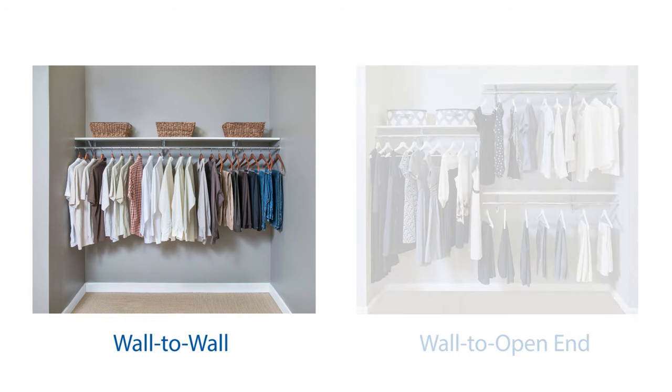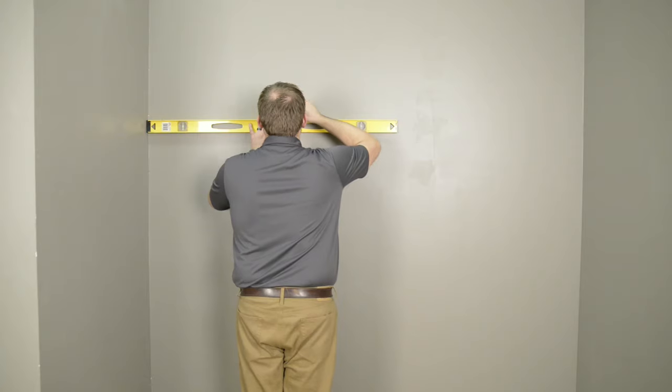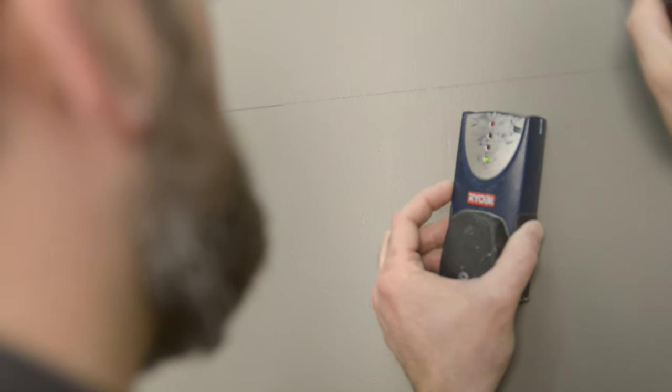First is a wall-to-wall installation. Measure the desired height of the shelf. Mark the wall and draw a level line. Use a stud finder and mark the locations of the studs.